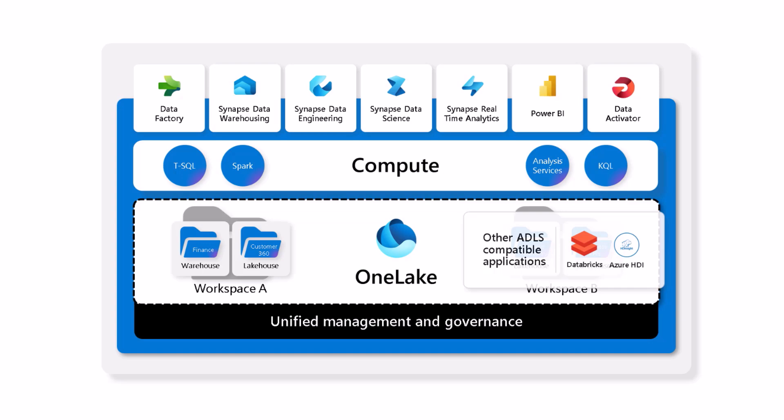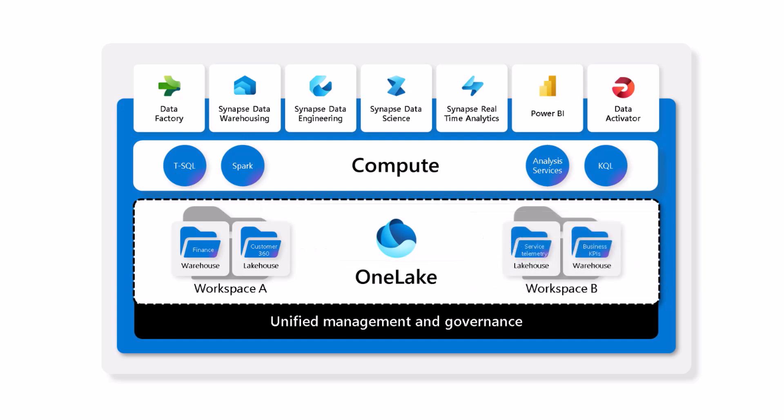Your data engineering team could use Databricks notebooks and use the ADLS DFS APIs to land the data directly in a lake house. They could also create shortcuts to existing ADLS Gen2 or Amazon S3 accounts to virtualize existing external data into a Fabric lake house. All engines would still work over the same copy of data. We're doing a lot of work to optimize our engines to work directly with Delta Parquet as their native format for tabular data, as you can see with T-SQL for data warehousing and Direct Lake mode in Analysis Services for BI.